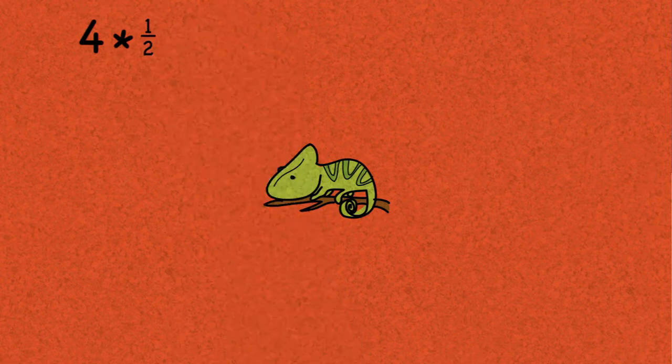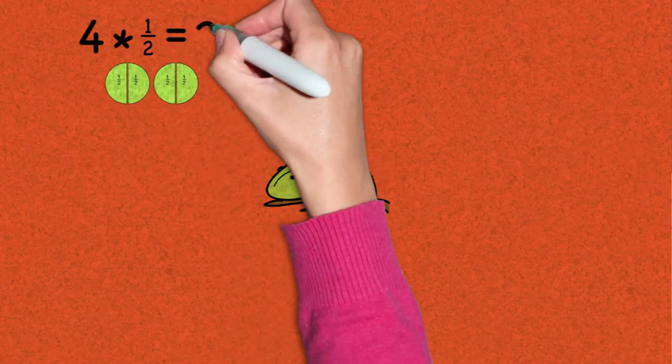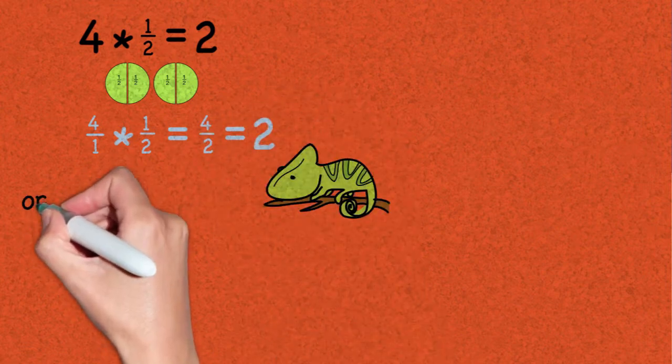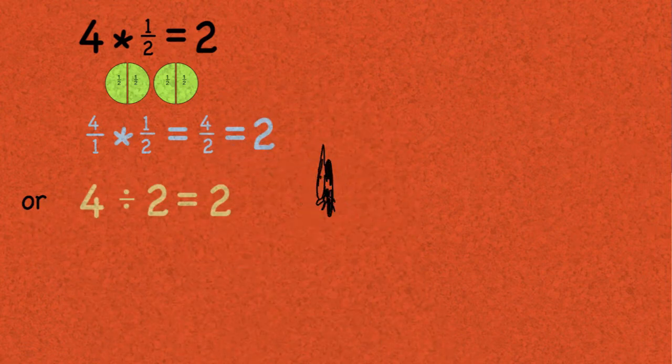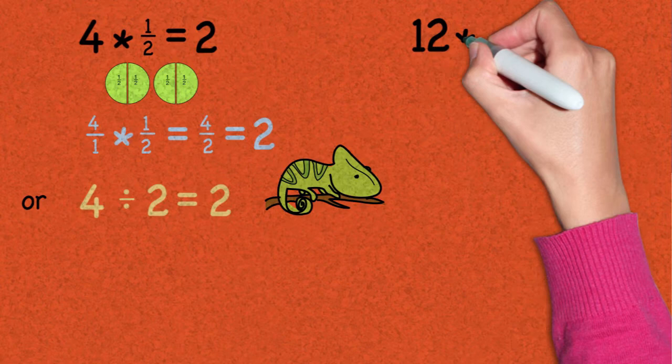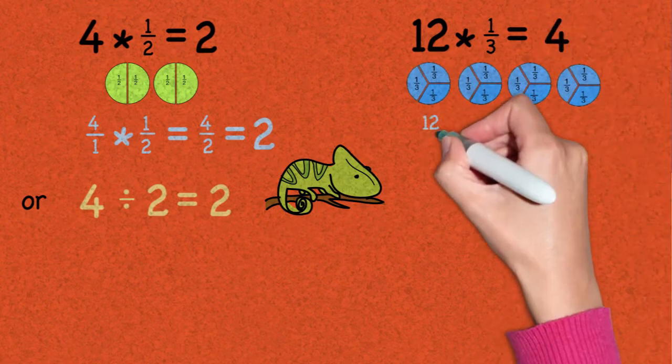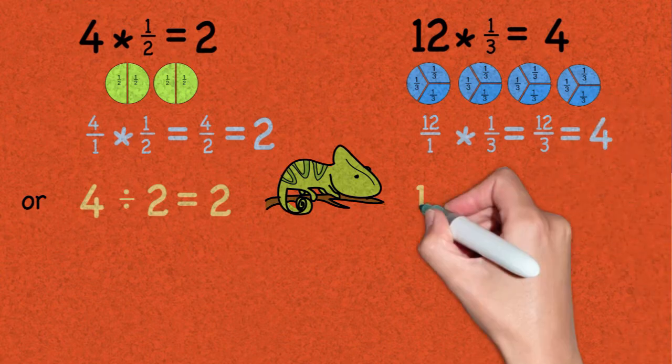I'm going to start with 4 times a half. Did you get 2? And how did you get it? Did you multiply it out, or did you just divide by 2? What about 12 times 1 third? I got 4, but didn't actually multiply by 1 third. I divided by 3.